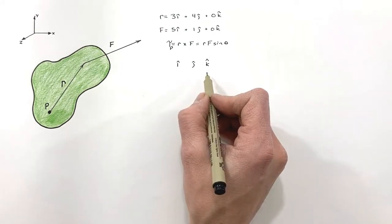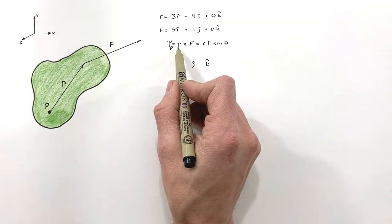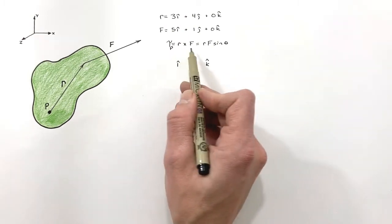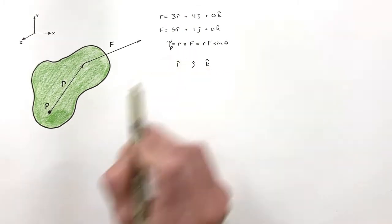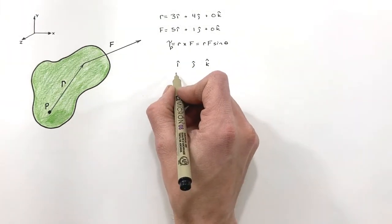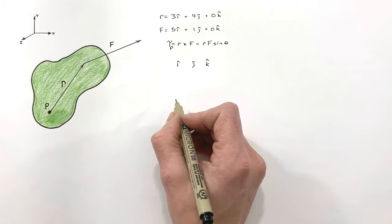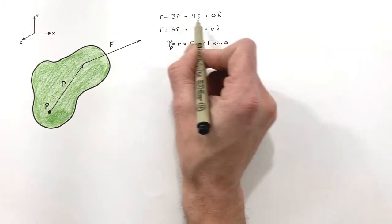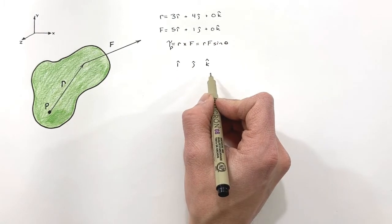Now the next line we're going to put in our three by three matrix is the radius vector. It's important when you're dealing with cross products that you do things in the correct order. R cross f is not the same as f cross r. So we need to put in the first quantity with which we're dealing with. In this case, that is radius.